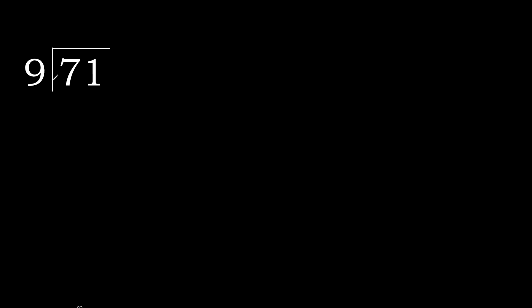71 divided by 9. 7 is less, therefore next. 71 is not less, therefore with 71. 9 multiplied by which number is nearest to 71, but not greater?